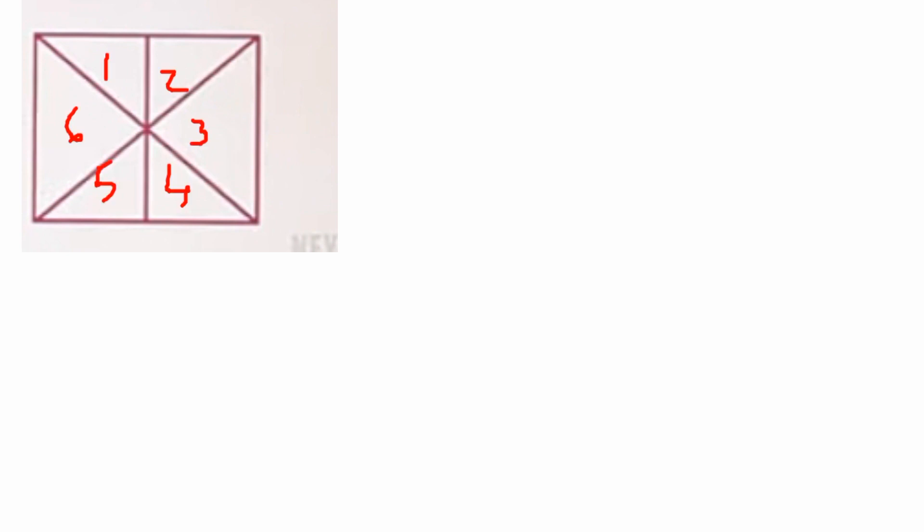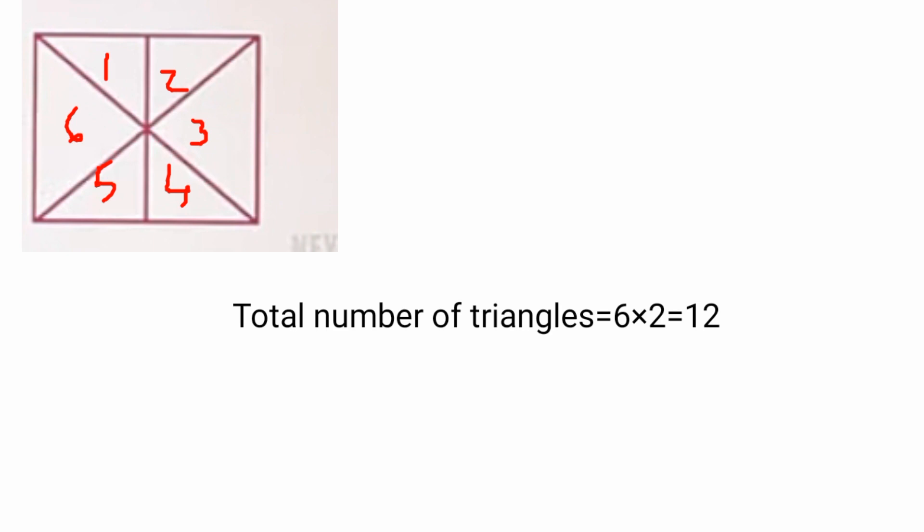In the first video on counting figures you saw shortcuts to find the total number of triangles, and we will do some problems based on that. To solve this question — and for those who haven't seen that video, I'll explain again — take one diagonal and start numbering in one direction: one, two, three, four, five, six. There are six triangles. To find the total number of triangles, multiply six by two, giving twelve triangles. This is the base figure from which many questions can be asked.